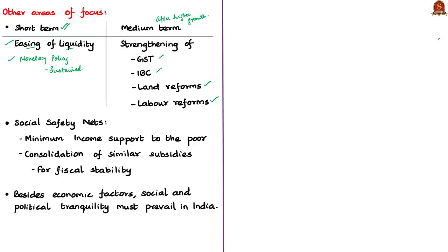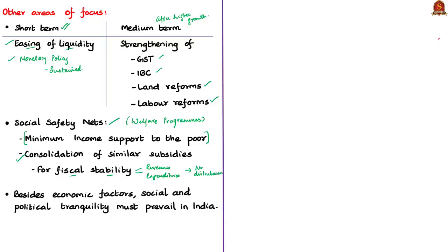The author discusses social safety nets — welfare programs of the government for the poorest, weakest and vulnerable sections of society. One such program is providing minimum income to the poor. The author welcomes this but is wary that such welfare schemes should not disturb the fiscal stability of the government, meaning its revenues and expenditures. He suggests consolidating or clubbing all existing subsidies for the poor and providing them in the form of minimum income support, so fiscal stability can be maintained.